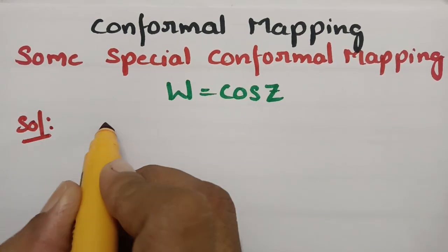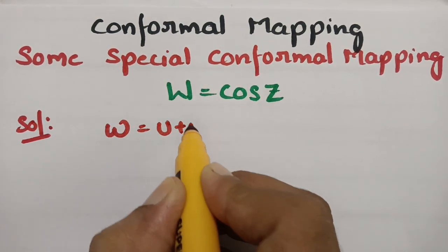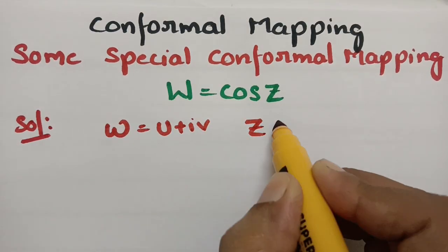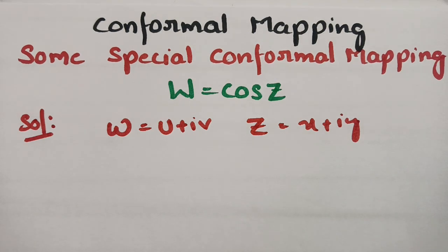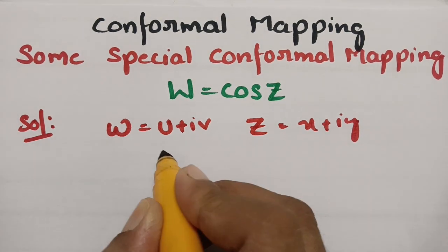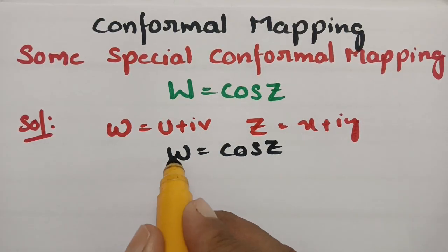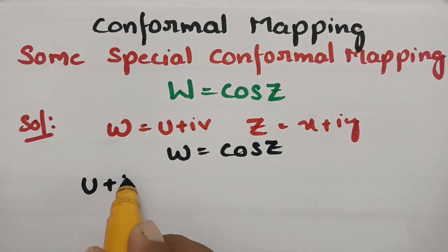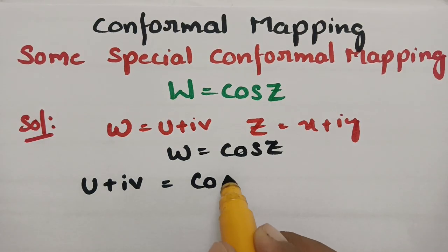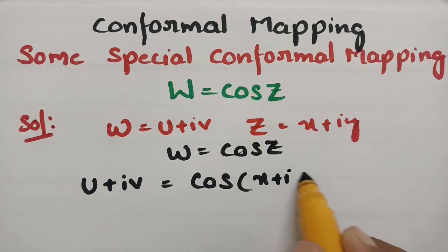As everybody knows, W equals U plus iV and Z equals X plus iY. So if I substitute the same thing in W equals cos Z, we write U plus iV equals cos of (X plus iY).